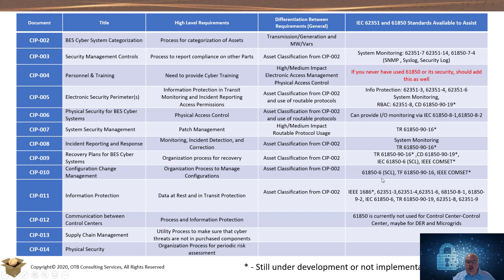Configuration change management — 61850's system configuration language is a major player in that. The ability to remotely update and patch, which is 90-16 and IEEE Comset, can all provide assistance there. Information protection is about data in transit and data at rest. IEEE has a standard under revision called 1686 that talks about various aspects that need to be implemented in an IED. There is a whole suite of 62351 and 61850 standards that provide assistance in securing and preventing threats for data in transit and data at rest.